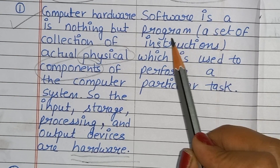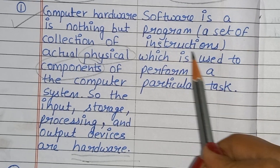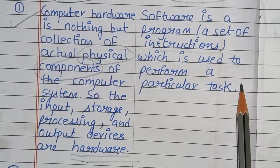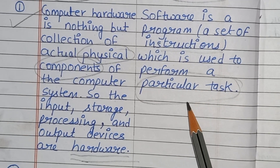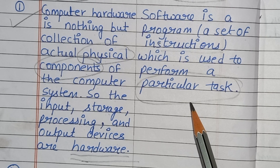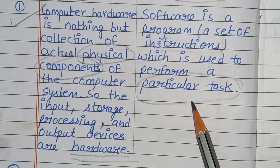Software kya hai? Software is a program — ek set of instructions which is used to perform a particular task. Agar hamne ek particular task perform karna hai, toh usse hum software ke through karayenge. Toh software kya huwa? Ek program huwa, ek set of instructions huwe, jinka hum use karte hai to perform a particular task.